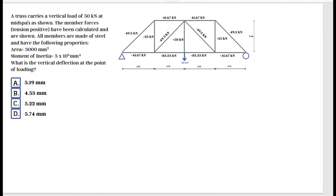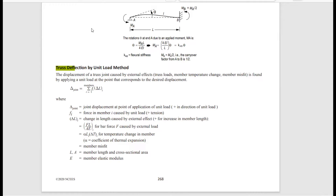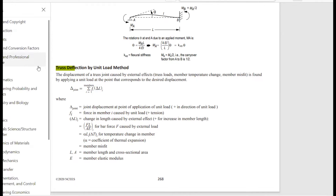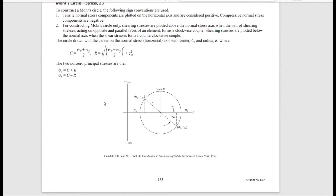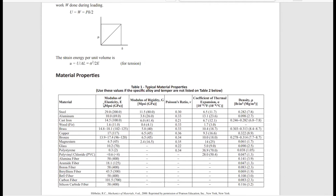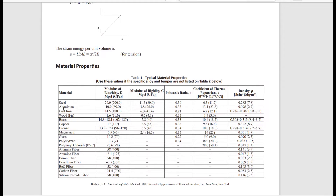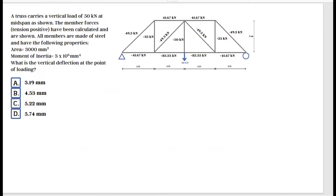The modulus of elasticity is not given to us directly — we have area and moment of inertia, but not E. Sometimes the problem won't give it because it's available in the FE Handbook. Under the mechanics of materials section, there's a table with modulus of elasticity for various materials. For steel in SI units, E equals 200 gigapascals.